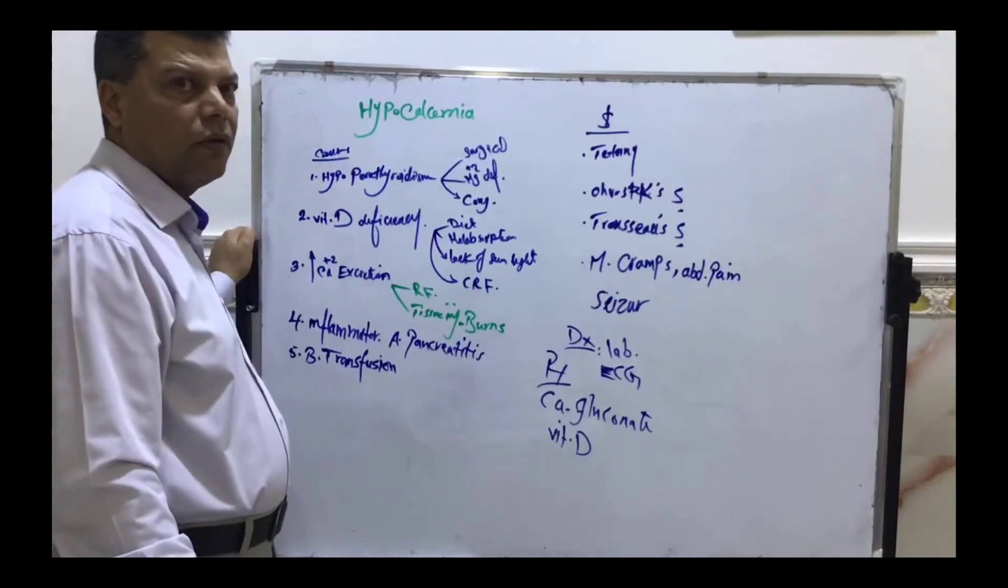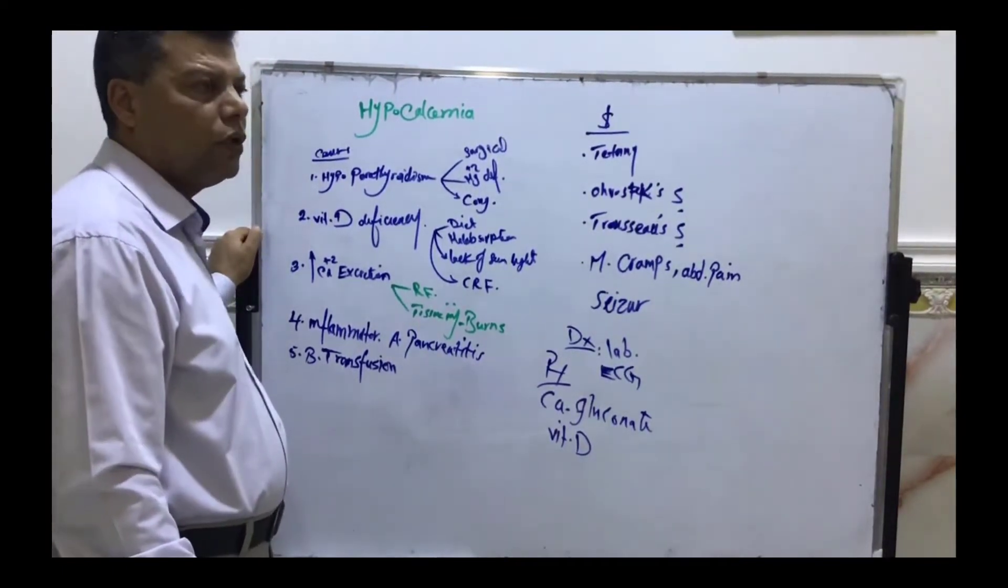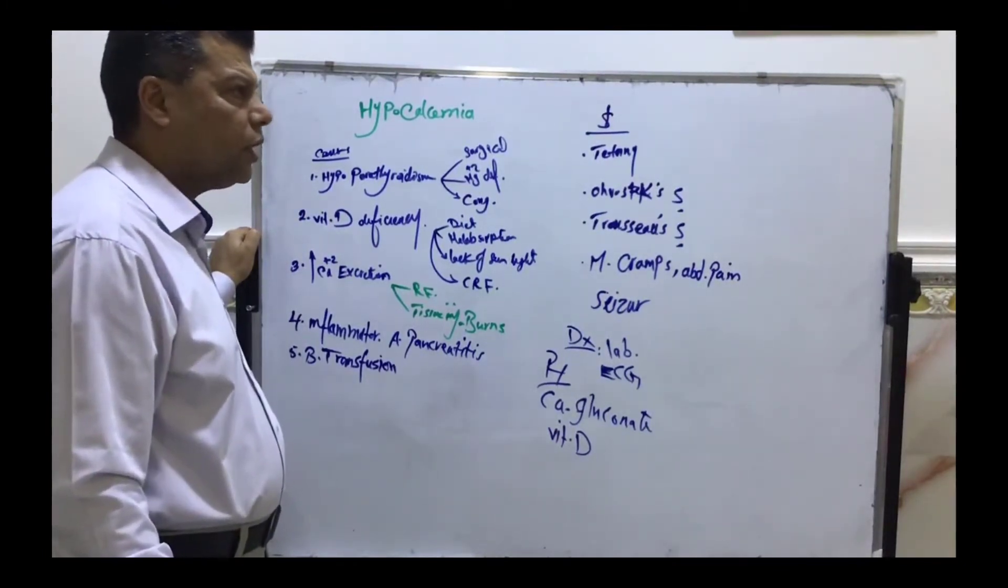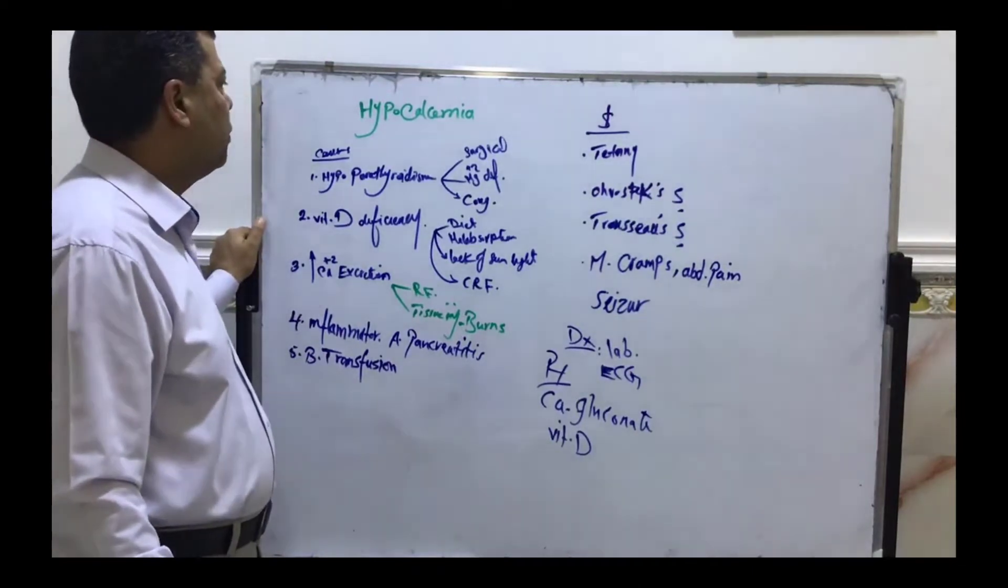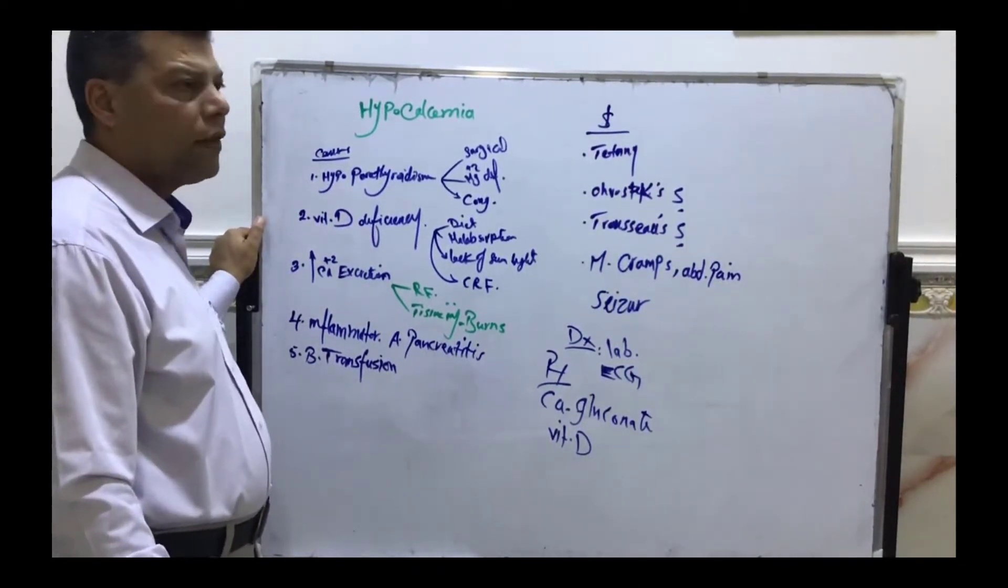Hypocalcemia. Serum level of calcium below 8.5 milligrams per deciliter is considered hypocalcemia. The main cause is hypoparathyroidism.